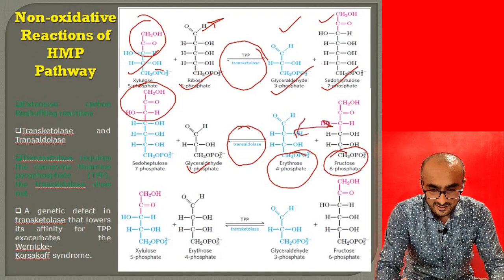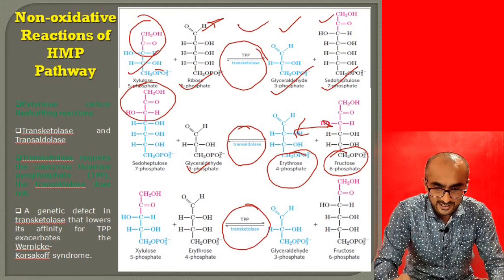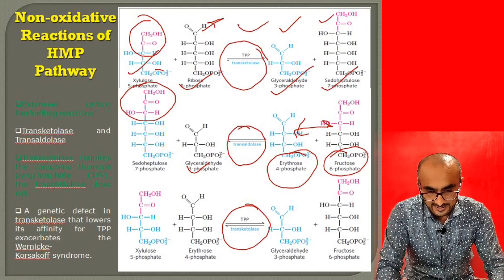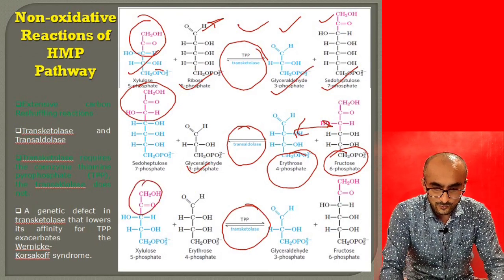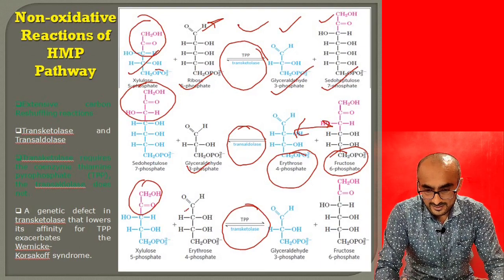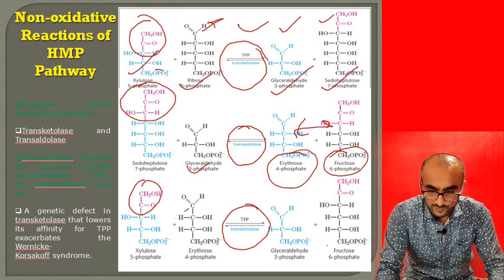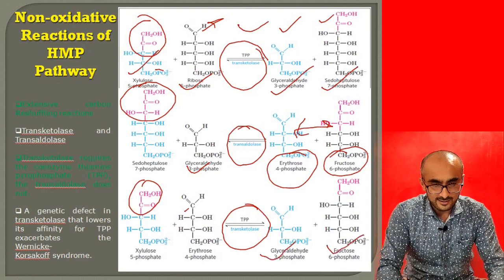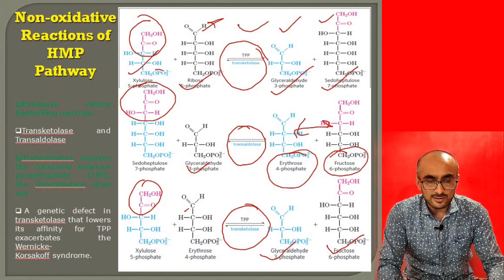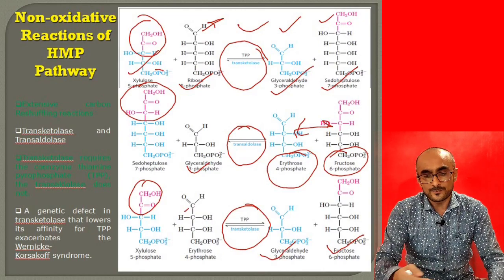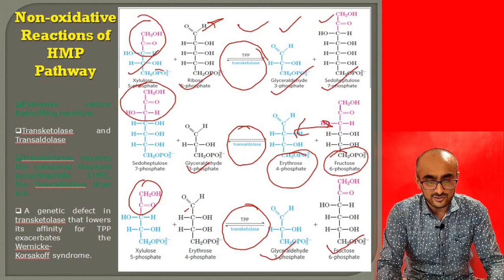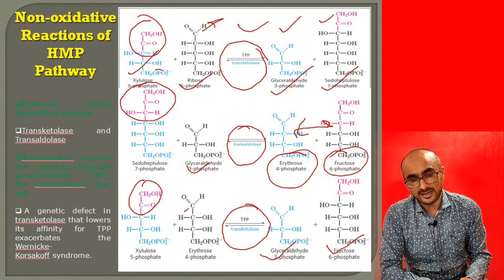In the third reaction of the non-oxidative phase, fructose-6-phosphate and erythrose-4-phosphate are acted upon again by transketolase. Transketolase transfers a two-carbon fragment from xylulose-5-phosphate to erythrose-4-phosphate, producing another molecule of fructose-6-phosphate and one molecule of glyceraldehyde-3-phosphate. These are extensive carbon reshuffling reactions with no energy requirement or energy gain.